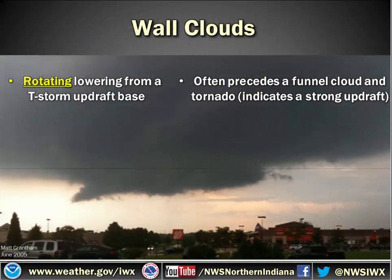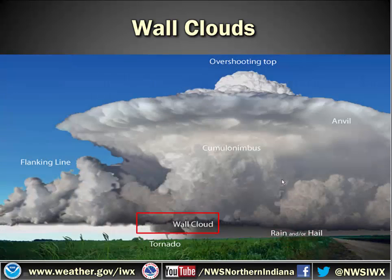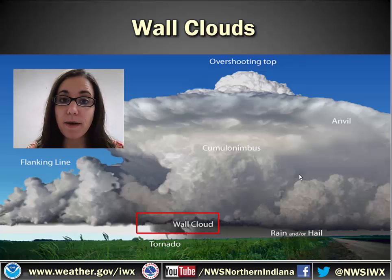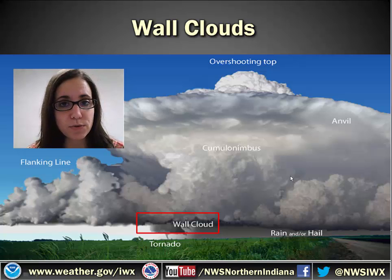The first one is a wall cloud. What is a wall cloud? It's a lowering from a thunderstorm updraft base, and it typically signifies a stronger updraft. It often precedes a funnel cloud and a tornado, so you will usually see this with those bigger tornadoes. You won't always see it before that, but these typically signify that something significant is going on in the storm. Where would you see this? When we think about context, where would it be if you were looking at a supercell storm?